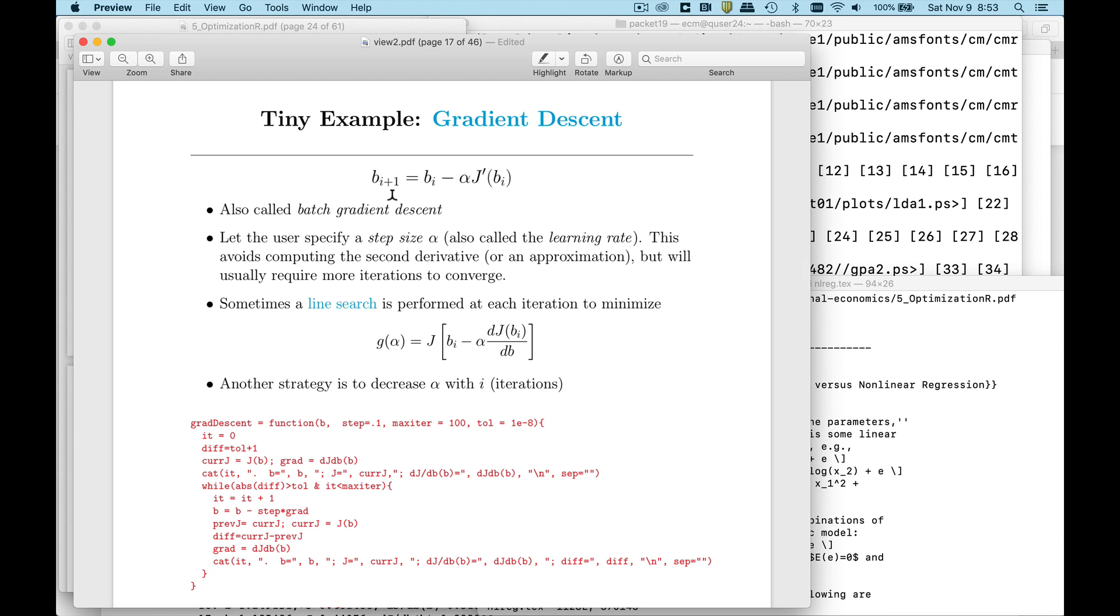A couple things: this is called batch gradient descent as opposed to stochastic gradient descent which we'll be covering in a couple weeks. Now the step size is really critical, it's also called the learning rate in machine learning, and getting that step size right is very important.